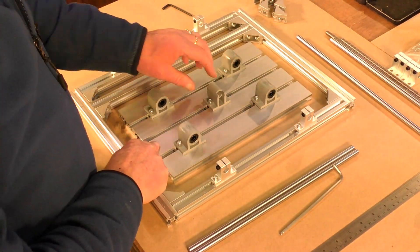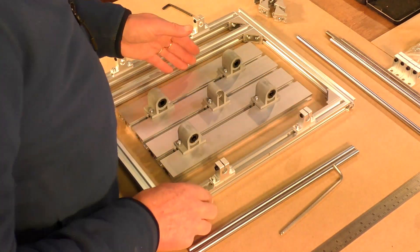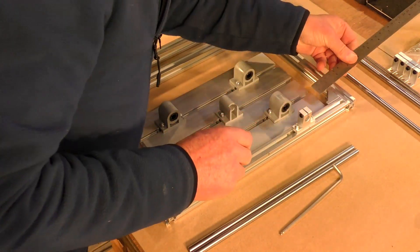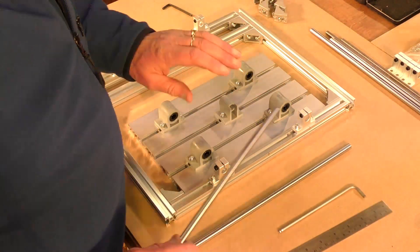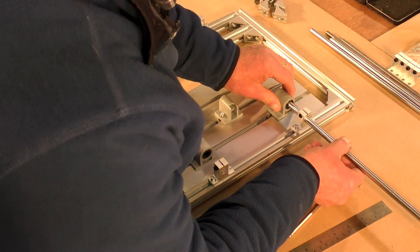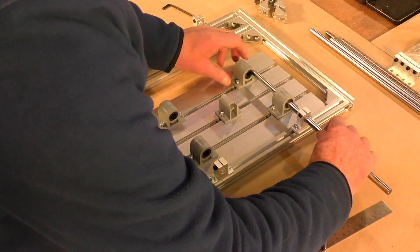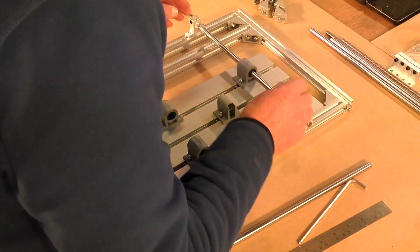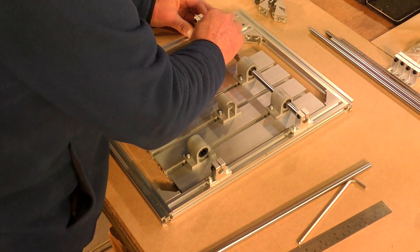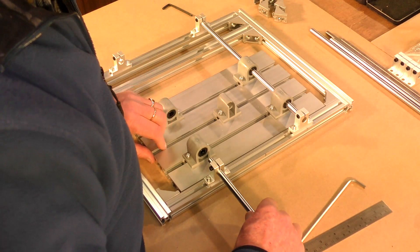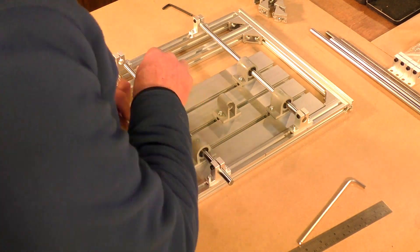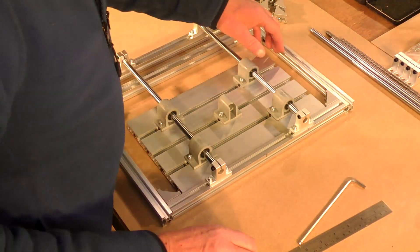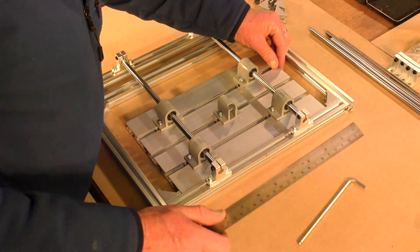Okay you'll notice that the hole securing hole is offset on those bearing blocks. So we just slide the rail and then make sure it's square to the frame, that is the bed is square to the frame.